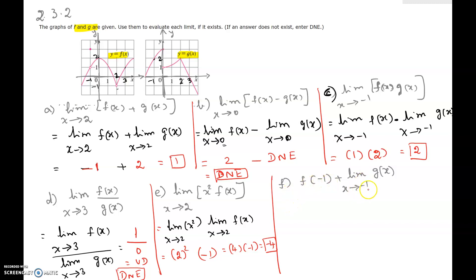Part f: f(negative 1) plus limit as x approaching negative 1 of g(x). This asks for the actual value of y when x equals negative 1 for the function f. We can see a solid dot at x equals negative 1, and the corresponding y-value is 3. The limit as x approaching negative 1 of g(x), which we already found in part c, equals 2. So it is 3 plus 2, which equals 5.